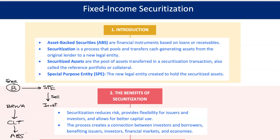Next, CLT issues asset-backed securities, or ABS, to investors who are now entitled to the cash flow generated by the car loans. BRWA's customers continue making their monthly payments on those car loans, but now these payments go to CLT, which then distributes the cash to the ABS investors. Through this setup, BRWA has transformed its receivables into immediate cash, while ABS investors enjoy a steady income stream from those car loans.